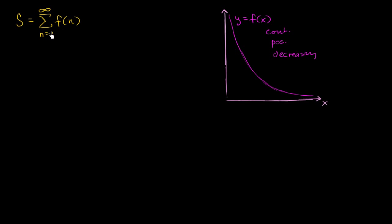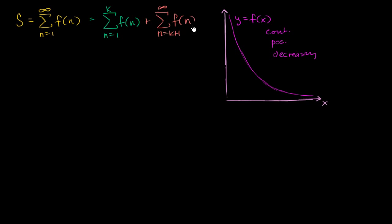The way to tackle it is to split this infinite sum into the sum of a finite sum — the first k terms, so the sum from n equals one to k of f(n). This is very computable; if k is low enough and f is a simple enough function, you could probably do this by hand, but you could definitely do it with a computer. Then it's going to be that plus another infinite series, picking up at the k plus one-th term and going to infinity of f(n). So if we could put some bounds on this remainder, that'll allow us to put some bounds on S.